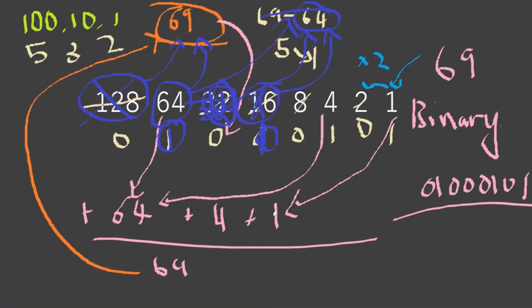Can 8 go into 5? No, it's too big, so add a 0. Can 4 go into 5? Yes it can. Now we minus 4 from 5 and it becomes 1. Can 2 go in? It can't. Can 1 go into 5? It can. That is 69 converting it to binary.